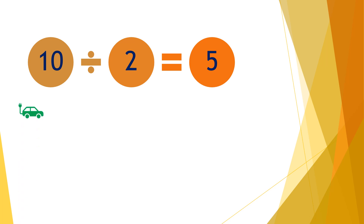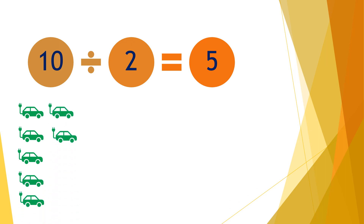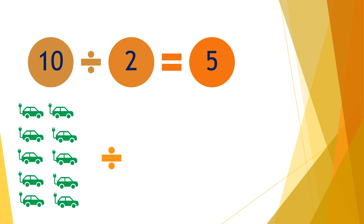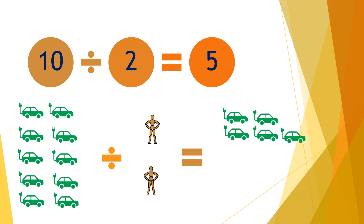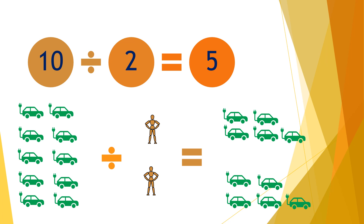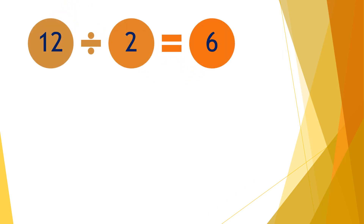Moving on to the next question: ten divided by two equals five. So if you have ten cars and divide them by two people, each person will receive five cars.